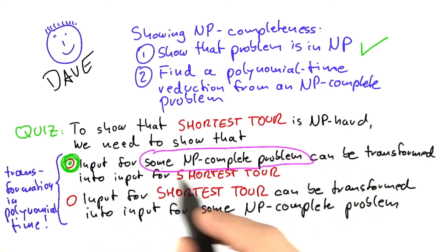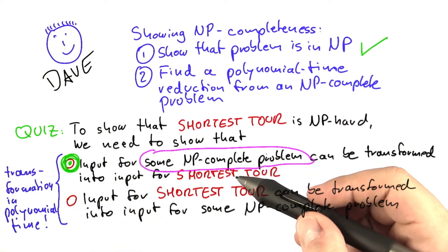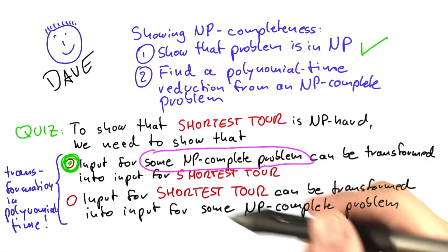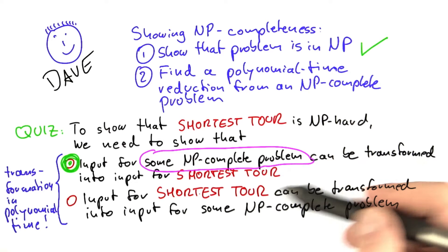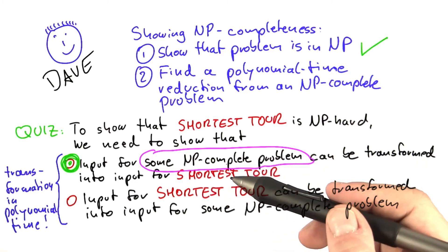Now it says some NP-complete problem here. So the question of course is, which one is it going to be? And later in this unit, I'm going to show you a bunch of resources that you can use to find suitable NP-complete problems to do your reduction.